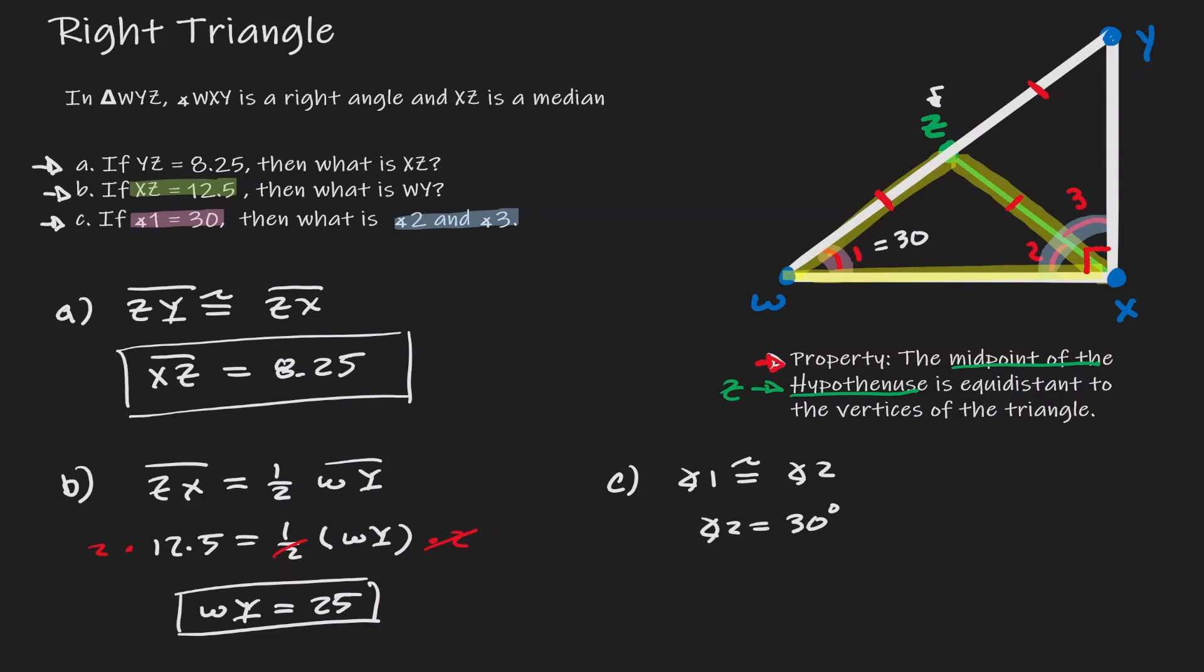Now to find out the value of angle 3, we can see that there's a relationship in here, and that is that if we add angle 3 and we add angle 2, we're going to get a value of 90 degrees. Notice that we know what angle 2 is. Angle 2 is 30. If we take away 30, then now we know that angle 3 is equivalent to 60 degrees.